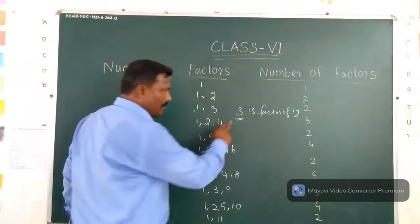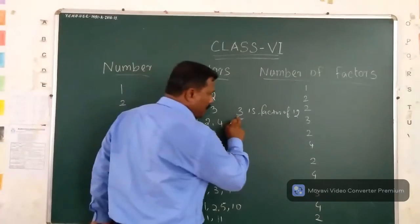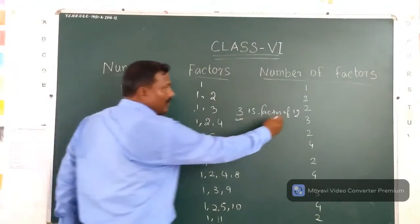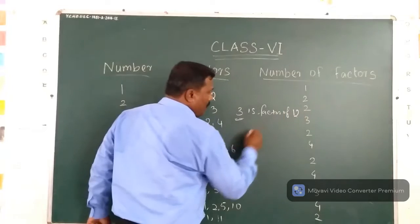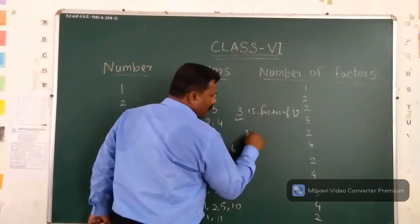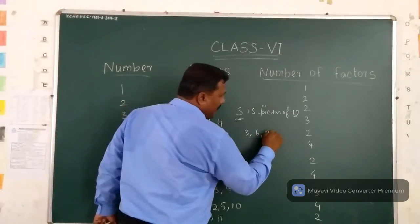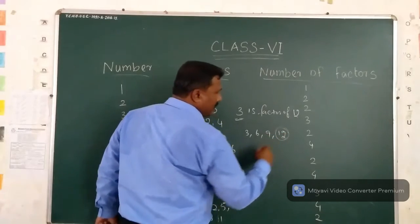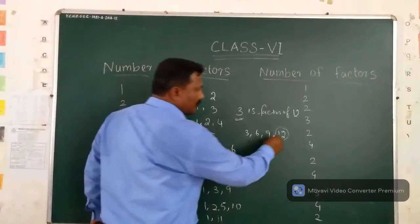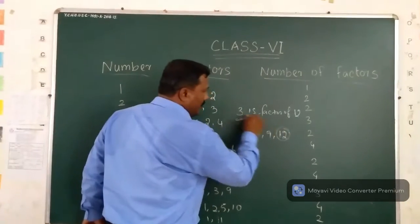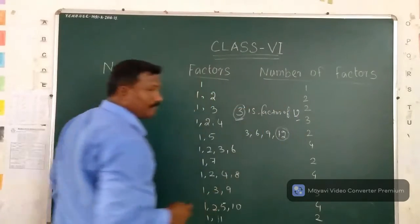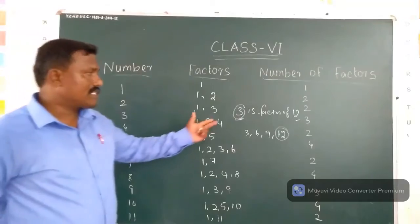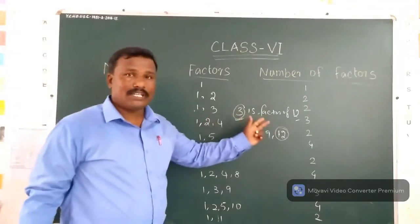So if you find the multiples of 3, we get 12. How? 1 times 3 is 3, 2 times 3 is 6, 3 times 3 is 9, 4 times 3 is 12. So 12 is a multiple of 3. Now you can understand what is a factor and what is a multiple.